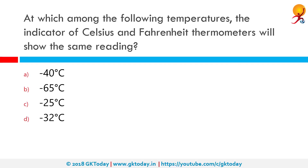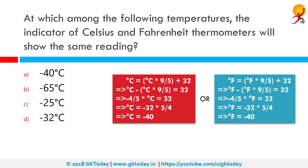At which among the following temperatures do the Celsius and Fahrenheit thermometers show the same reading? The formulas for converting between degrees Celsius and Fahrenheit are: F = (C × 9/5) + 32, or C = (F − 32) × 5/9. No matter which formula we use, we always get the answer of minus 40 degrees. The correct answer is minus 40 degrees.